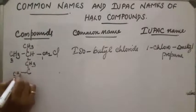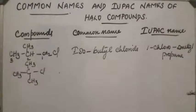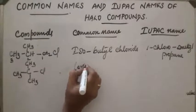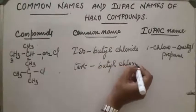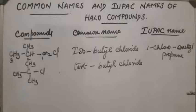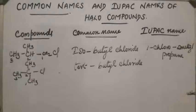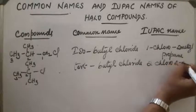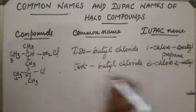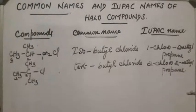Next is a tertiary compound where 3 CH3 groups are attached to 1 carbon atom. So the common name is tertiary butyl chloride. For the IUPAC name, numbering gives positions 1, 2, 3. At the second position there is both a methyl group and a chloro group, so the IUPAC name is 2-chloro-2-methylpropane. The parent hydrocarbon is propane.